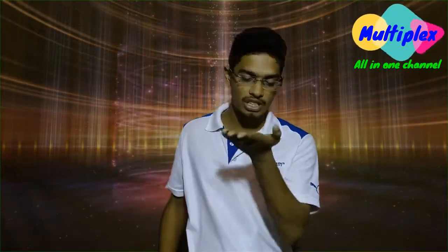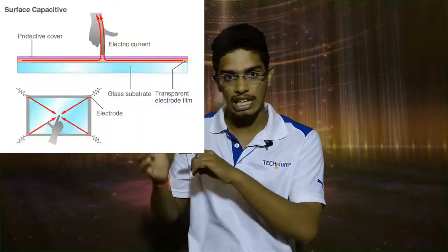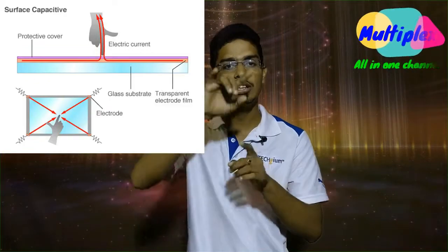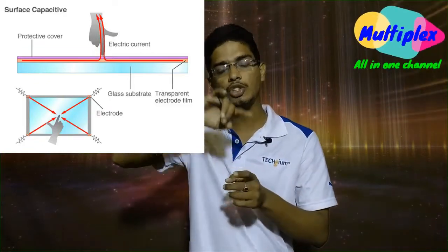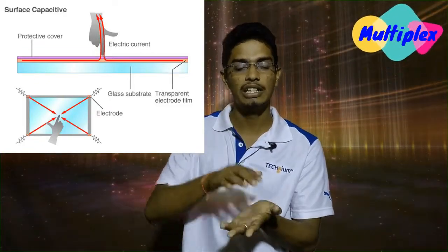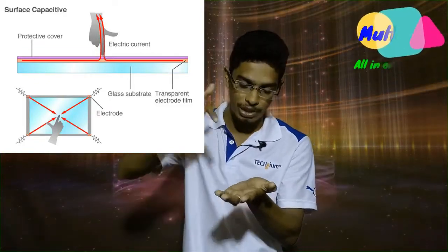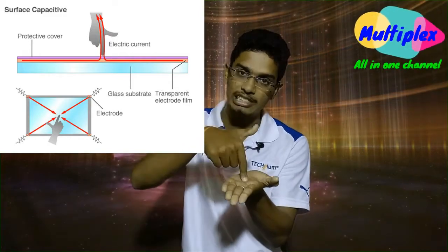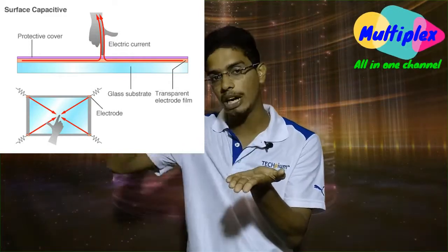First of all, our capacitive touchscreens. In the capacitive touch screen, we touch the glass layer. The glass panel has a circuit. When we touch the screen, the circuit is closed.